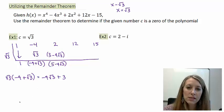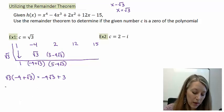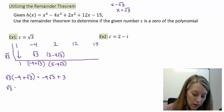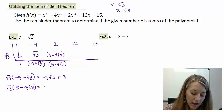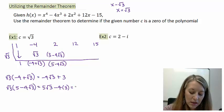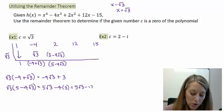Now I need to start this synthetic division process over. I need to take √3 times (5 - 4√3). So when I distribute that through, I get 5√3 minus 4√3 times √3 gives me 3. Or if I simplify this, this gives me 5√3 - 12.